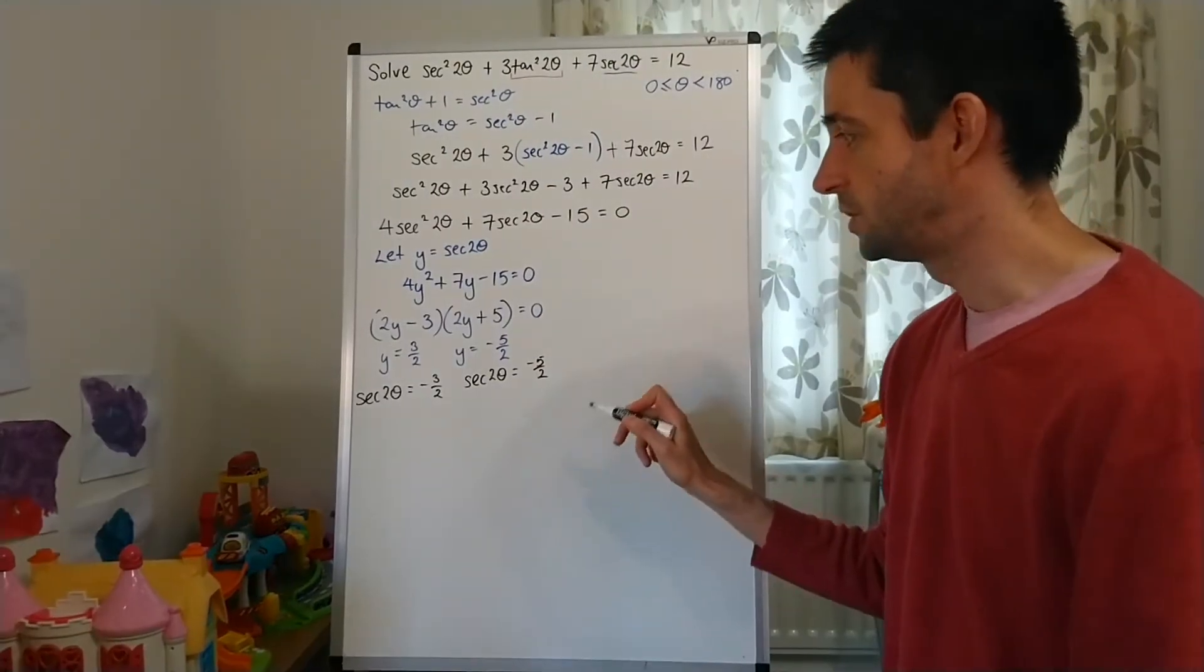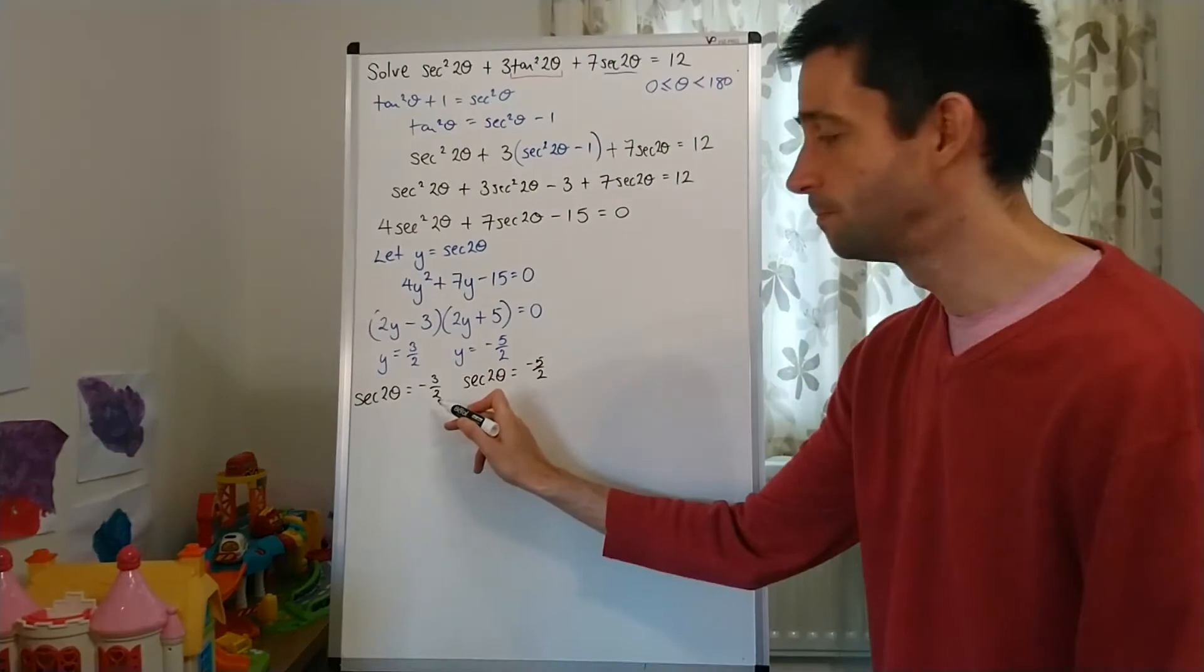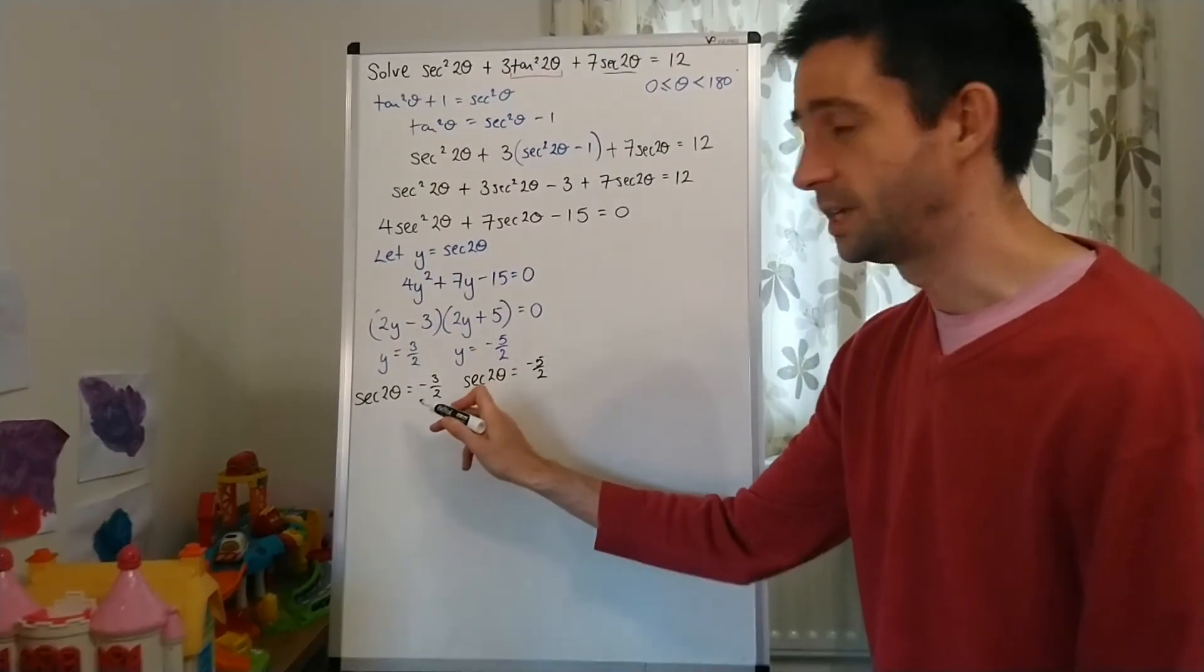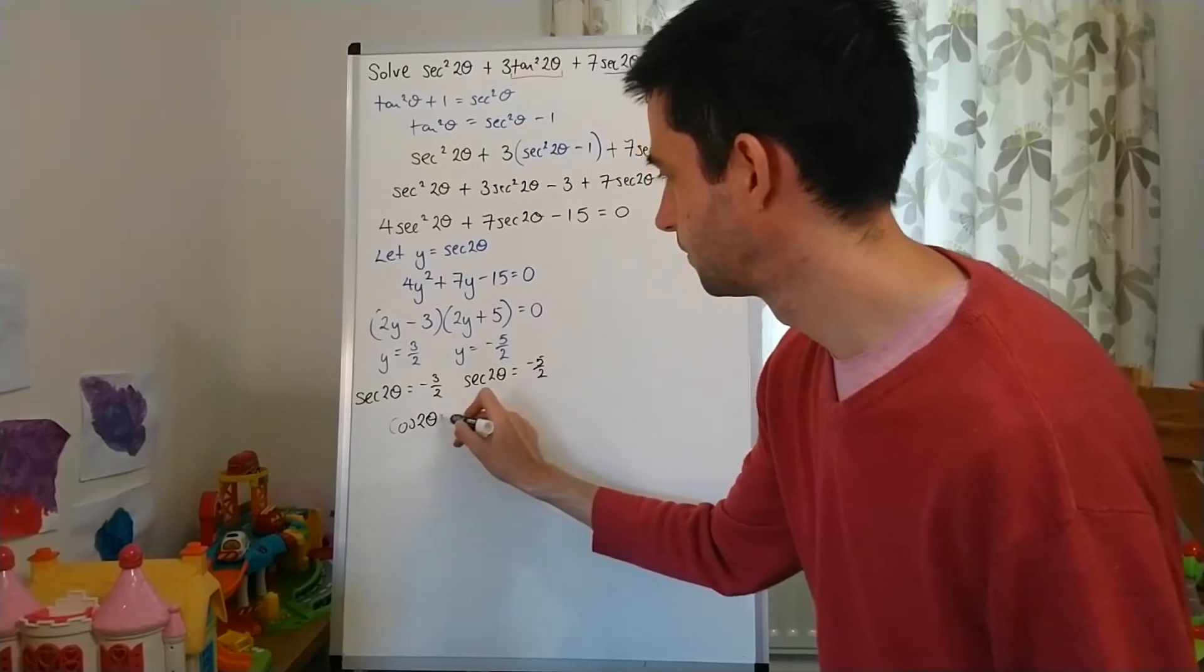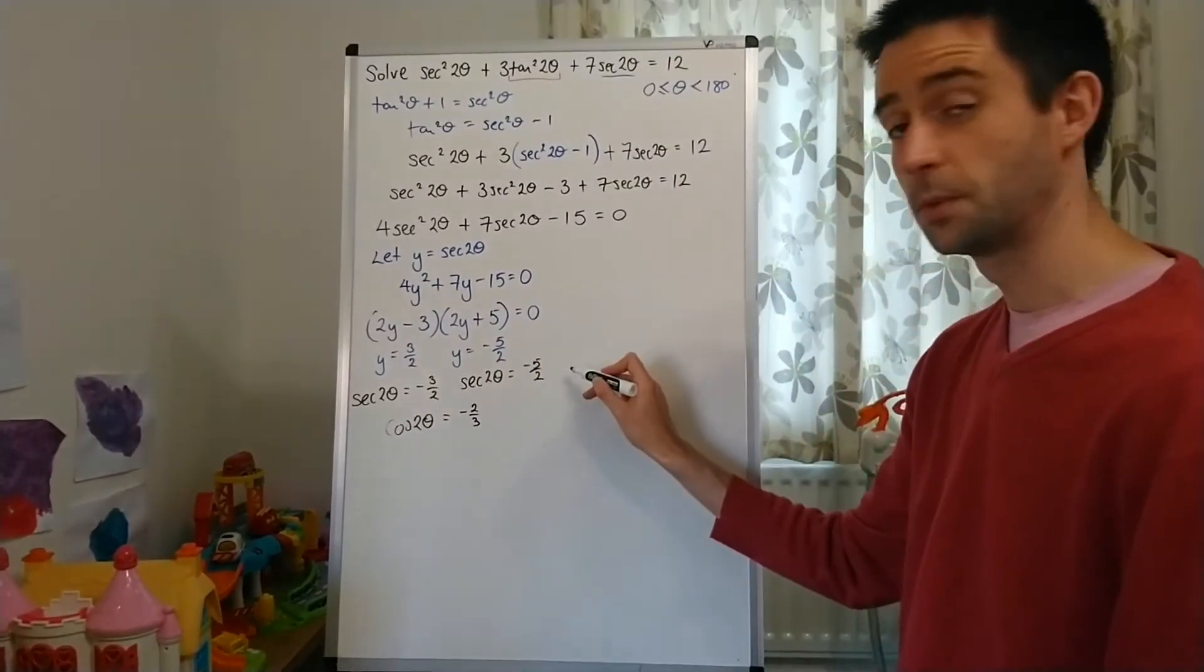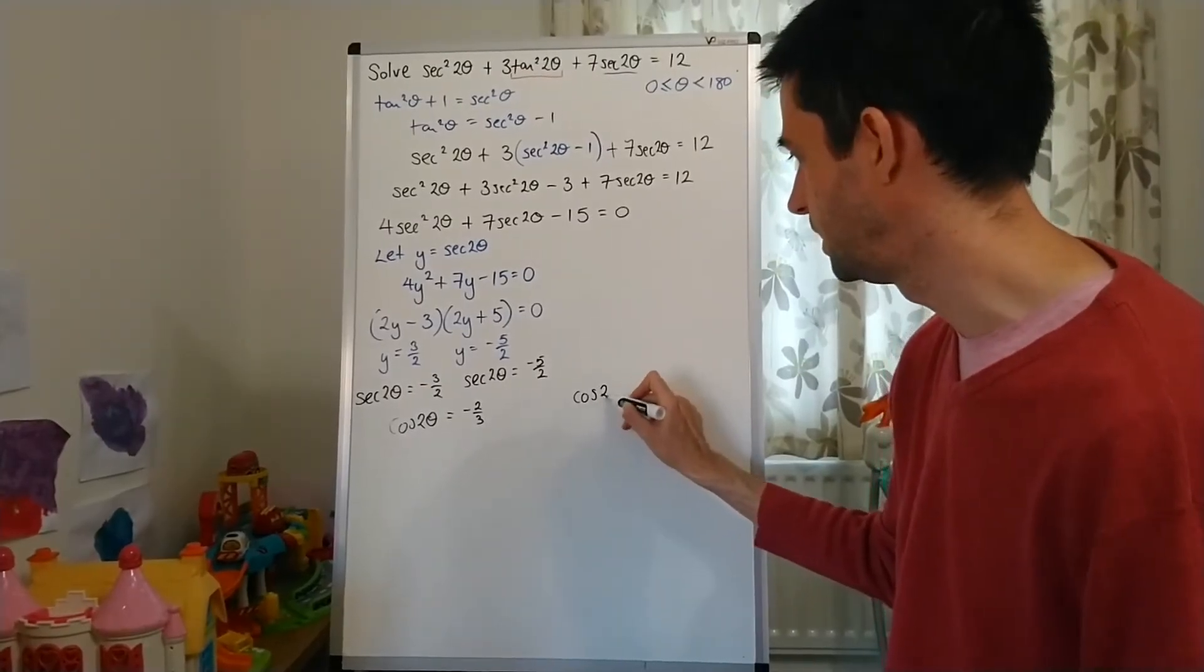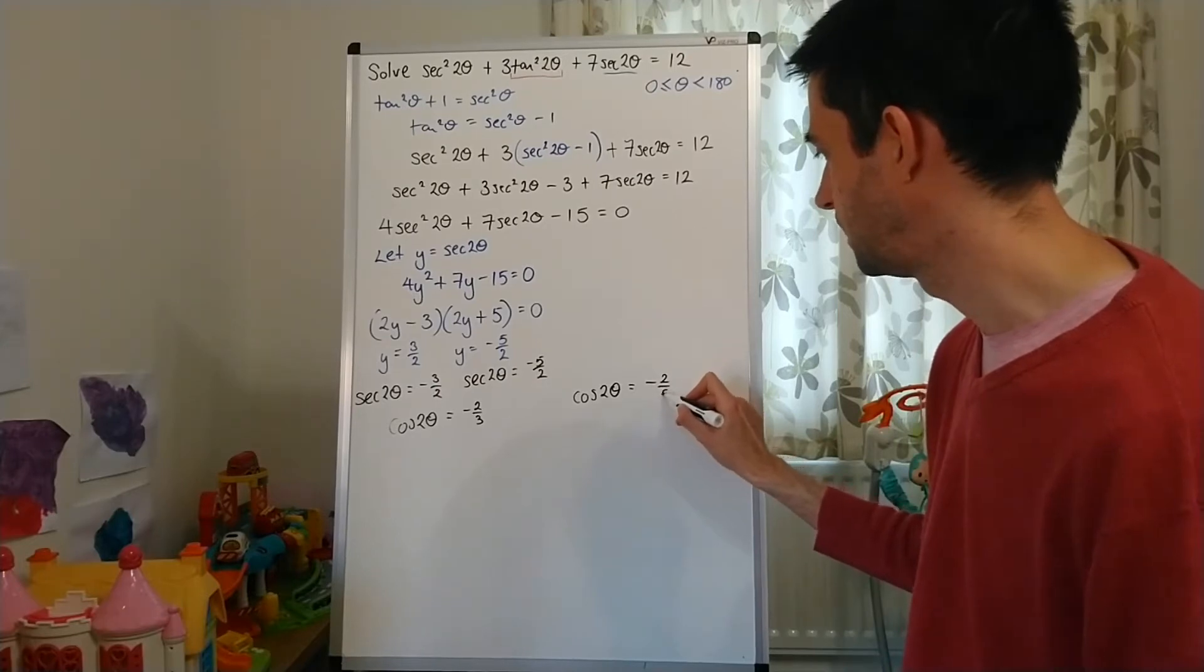So, two solution sets here. One from sec2θ = -3/2. But, of course, I'm not going to write sec2θ. I'm going to write cos2θ. So, that's -2/3. And then for the other one, sec2θ, again, I'm going to write cos2θ. And I'm going to say that is -2/5.